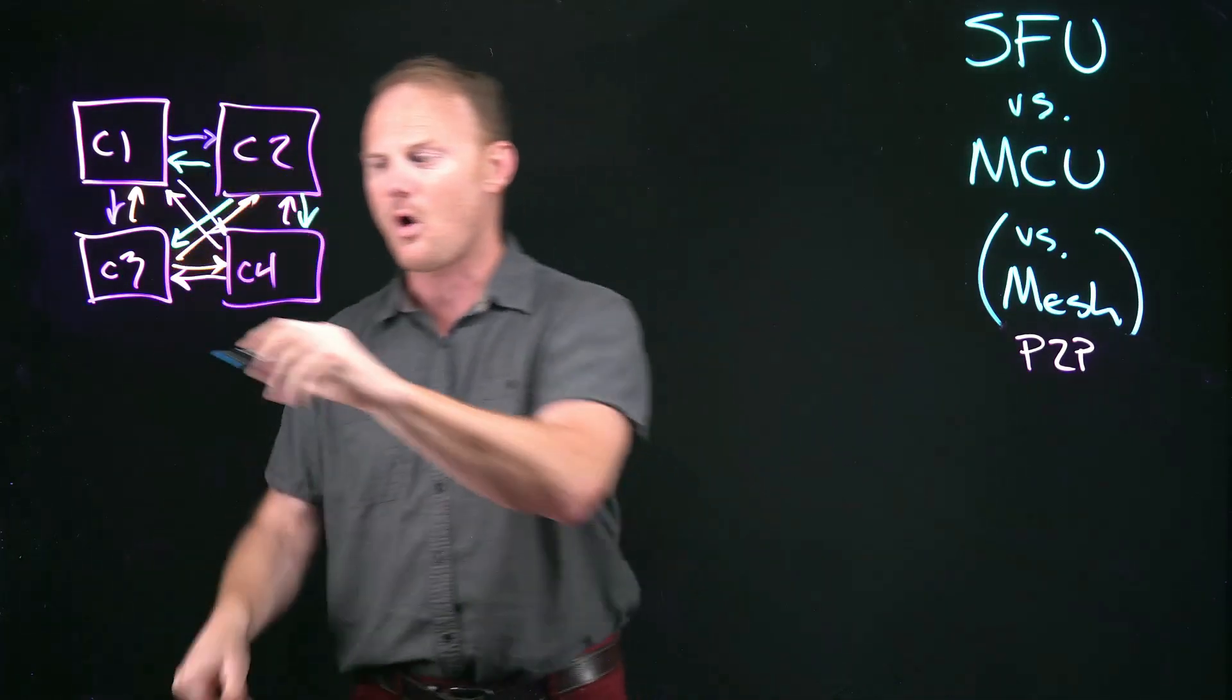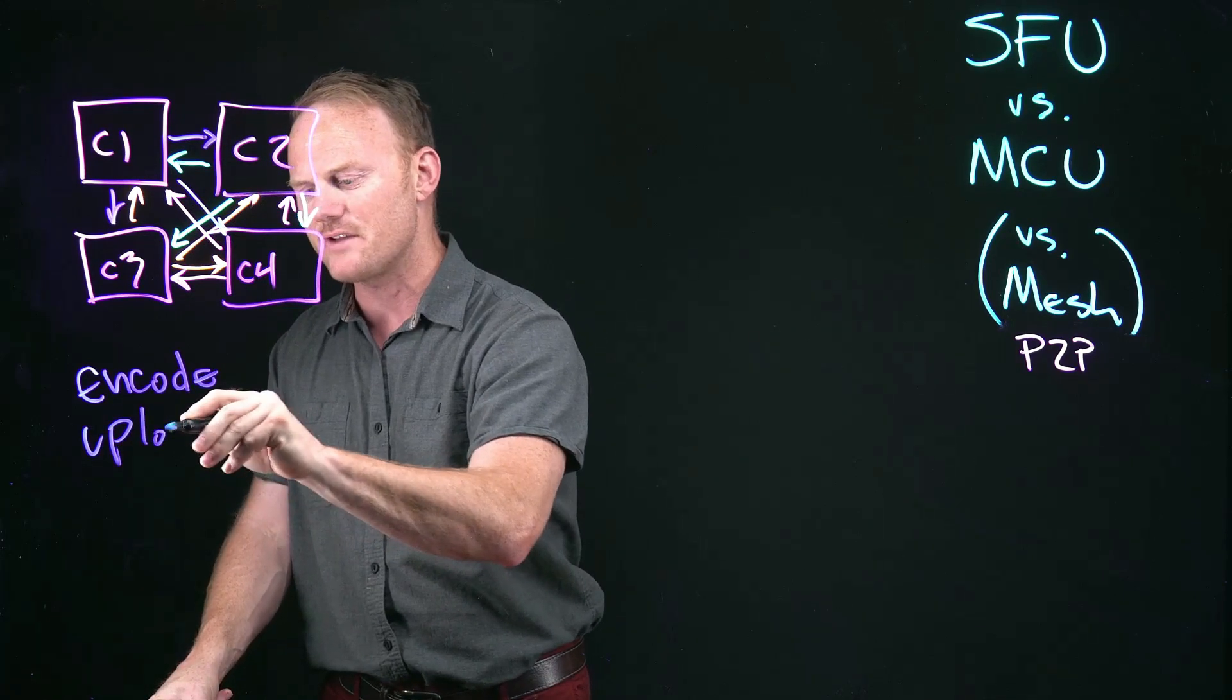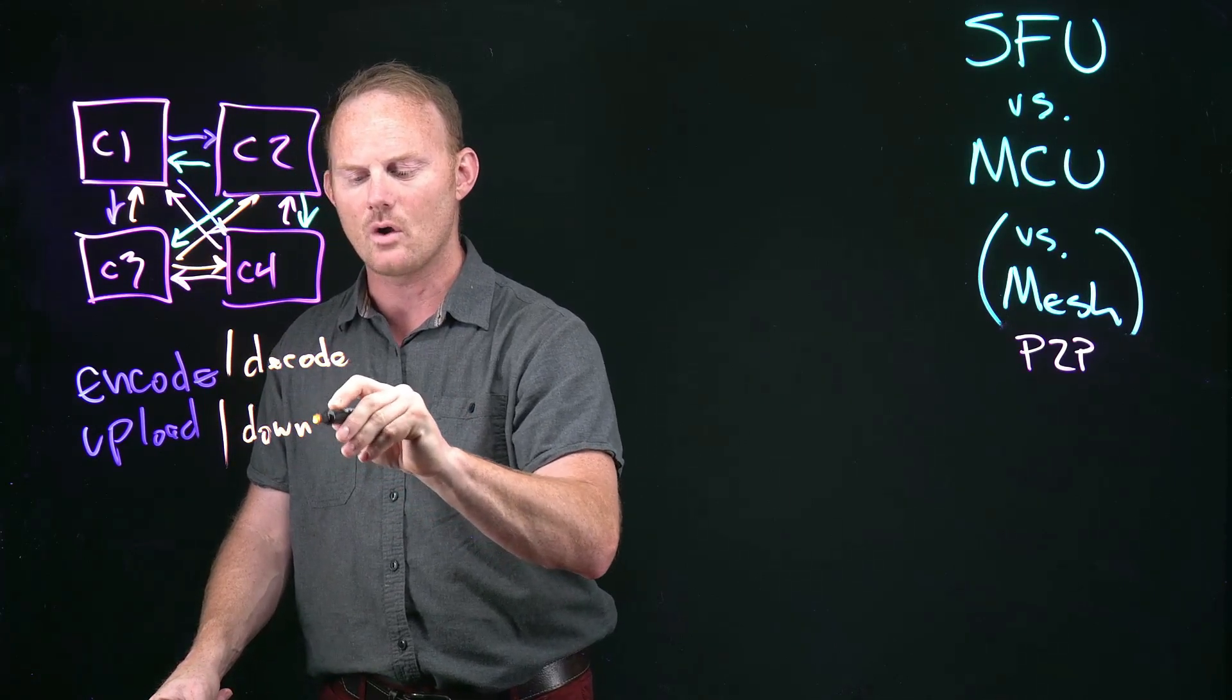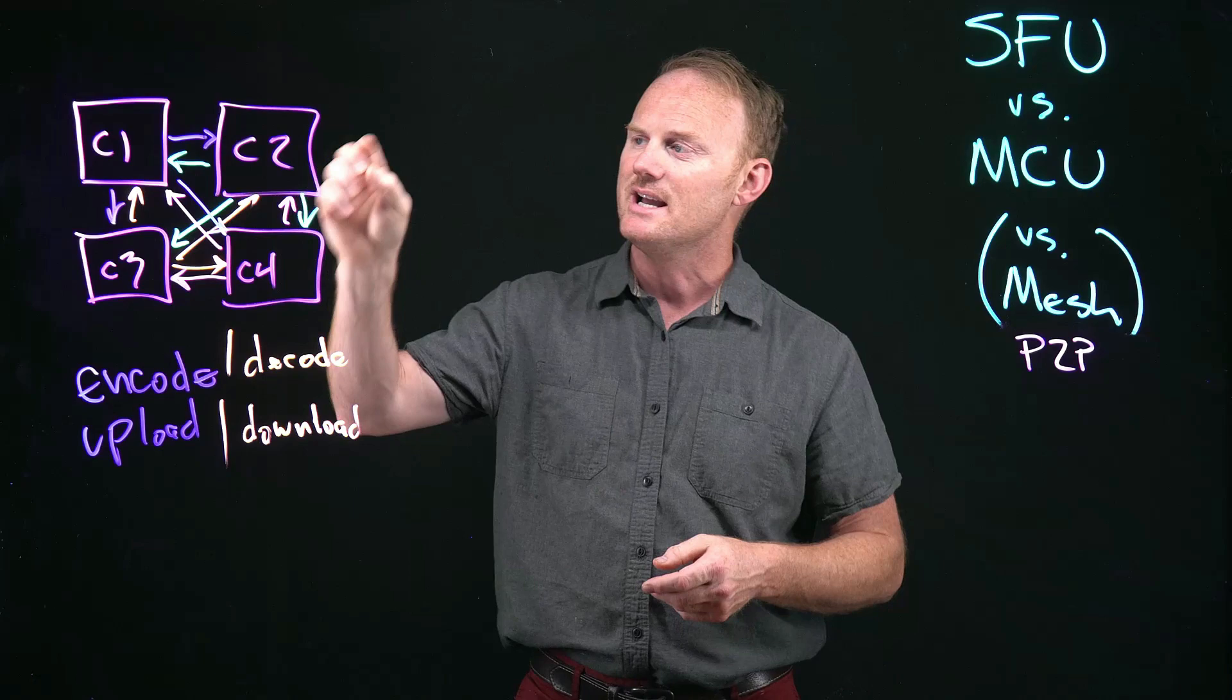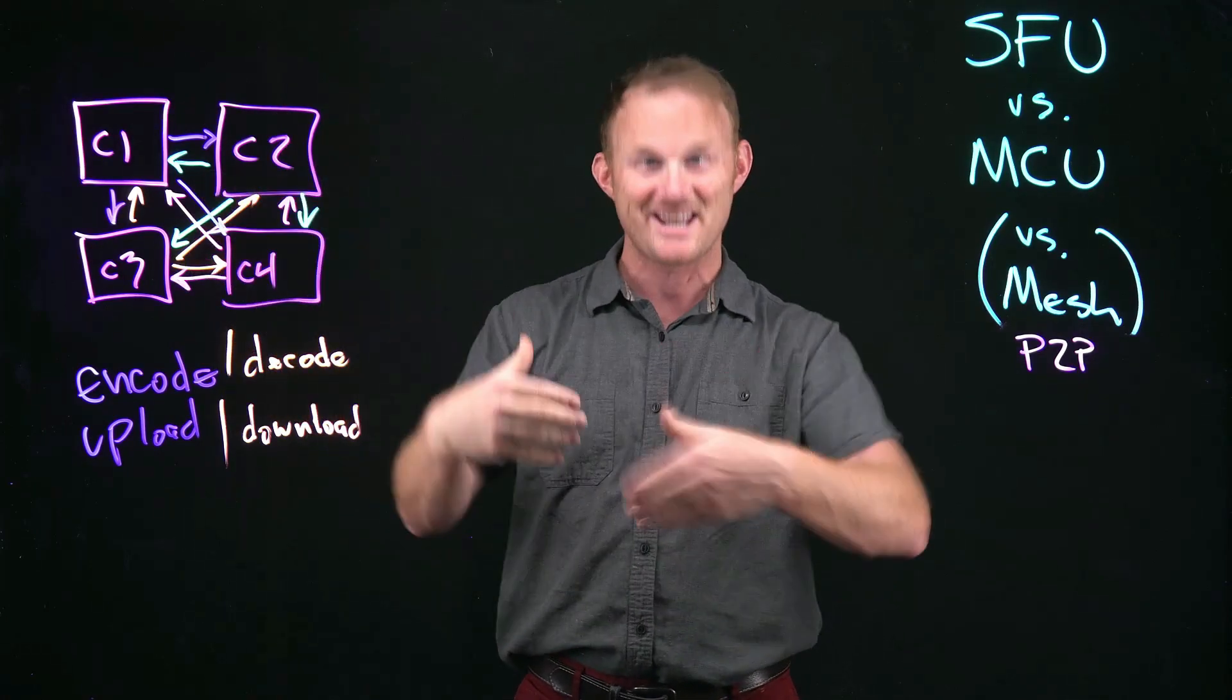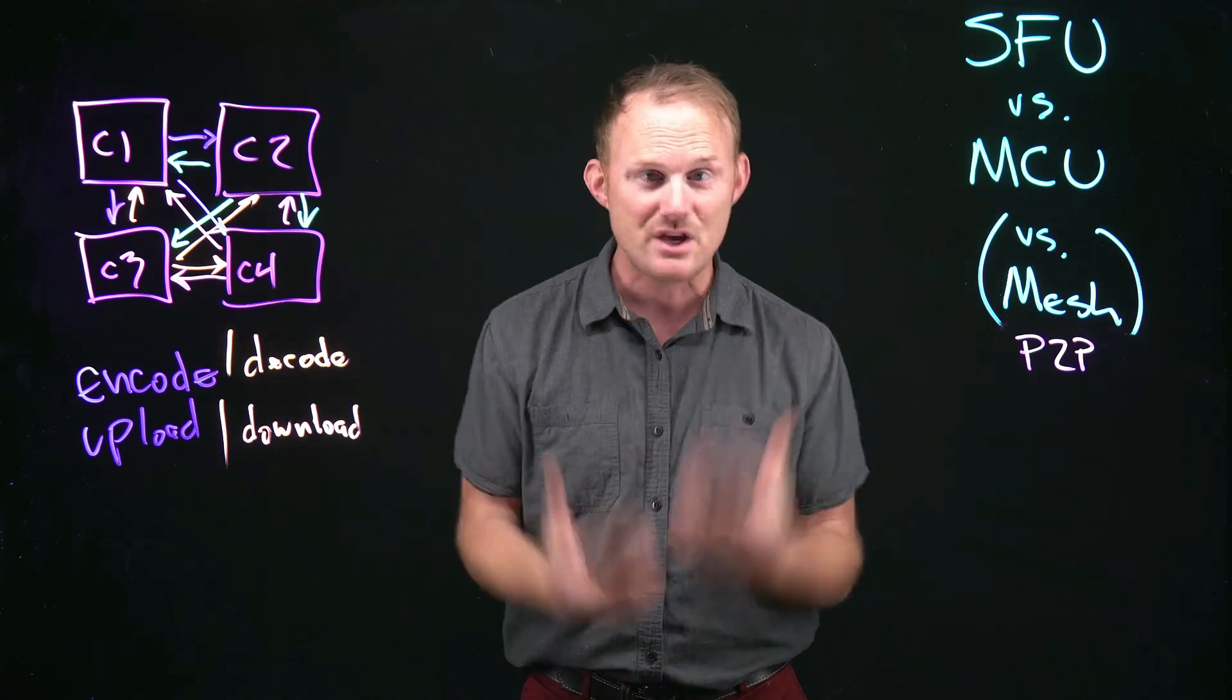So what's going on on all of these connections? Every single client has to encode its feed going up and it's going to have to upload that feed to all of the other clients. On the other side, when it comes down, it's going to have to decode the feed and it's going to have to download. When I say feed, I'm talking about the media stream, the get user media, whatever it happens to be. C2 has to encode for everybody, potentially all three times. It depends on how it's set up. And it's going to have to upload constantly in real time that feed. And everything that comes down blue, orange, and pink, going to have to decode all of those and download them in real time. That is a huge bottleneck.